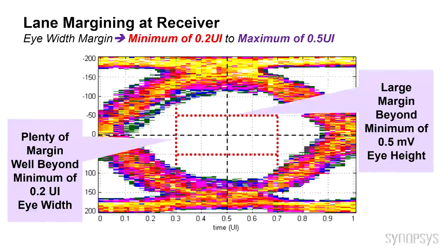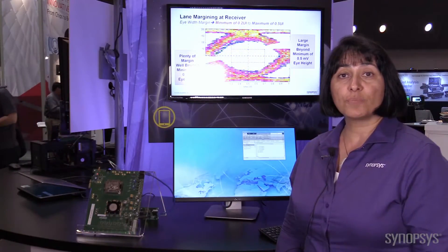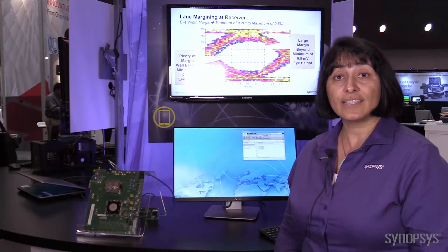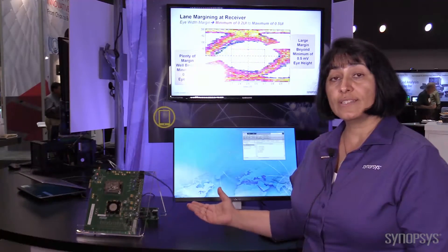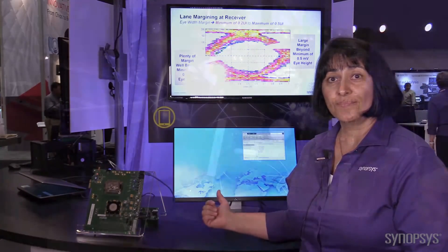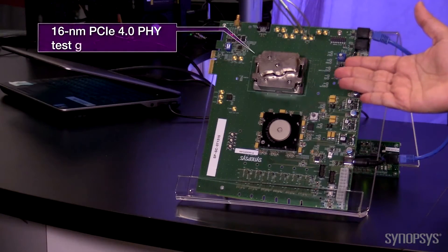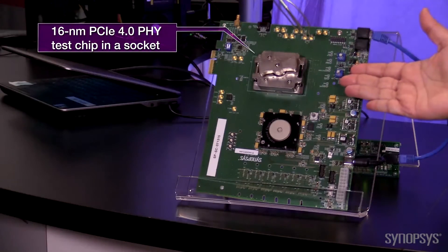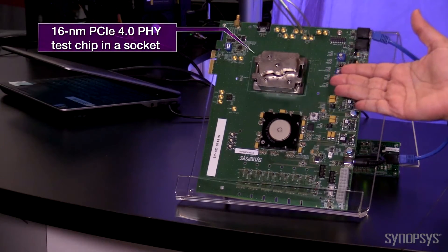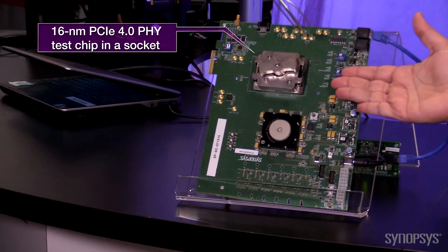As you see in this example, there is plenty of margin beyond the minimum 0.2 UI eye width and also the minimum 0.5 millivolt eye height. Now I would like to move on and demonstrate the actual performance of lane margining in silicon using our Synopsys PCIe Gen 4 in 16 nanometer technology. Here is our PCIe Gen 4 16 nanometer test chip that is capable of lane margining, and I'm going to demonstrate to you how this lane margining is done.